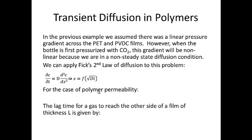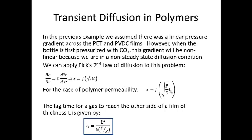Fick's Second Law says that the partial derivative of the concentration with respect to time is equal to the diffusion coefficient times the second order differential of the concentration gradient. I'm not going to solve this equation here — it requires some partial differential equation solutions — but suffice to say that the distance that a molecule will travel into the polymer is a function of the square root of the diffusion coefficient times time. Remember that the permeability is equal to the diffusion coefficient times sorption, so we can rewrite the equation for diffusion of the molecule as a function of the square root of the permeability divided by the sorption, times time.